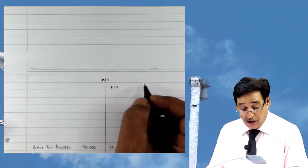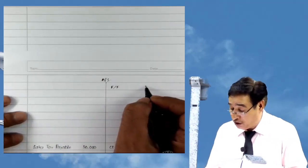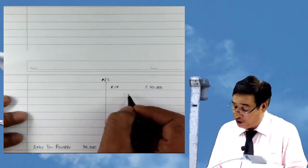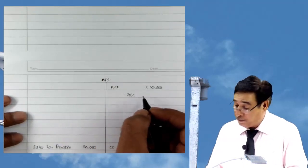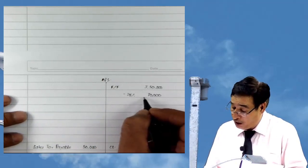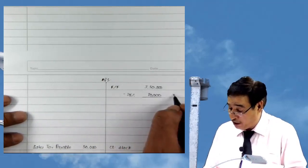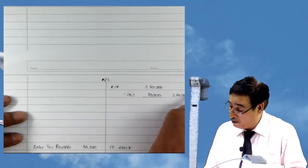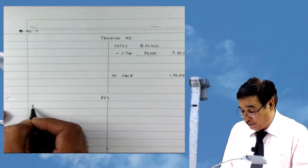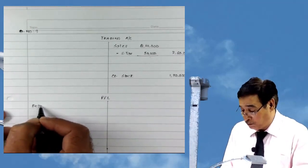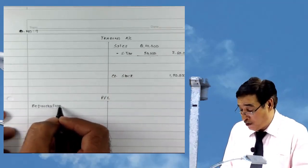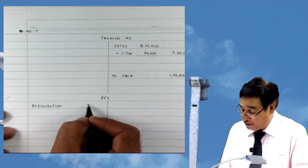Furniture is 3 lakh 50,000. Depreciation at 20% will be 70,000. In the outer column you will write 2 lakh 80,000 as net value. This depreciation will be presented in the P&L also — depreciation: 70,000.